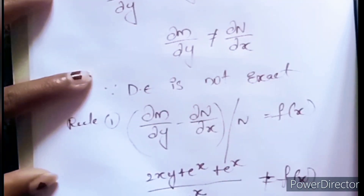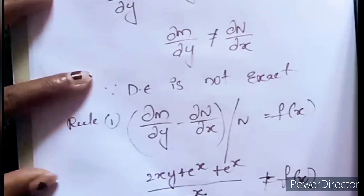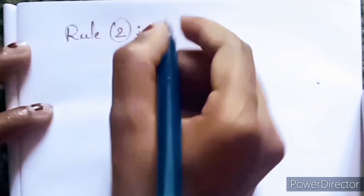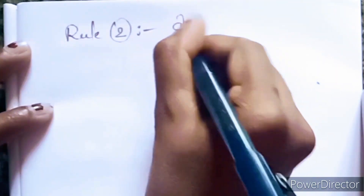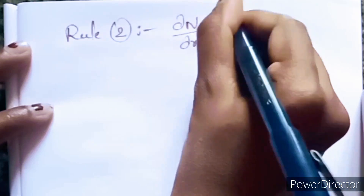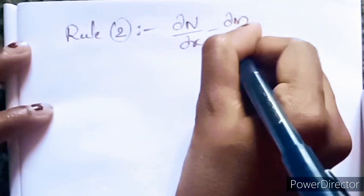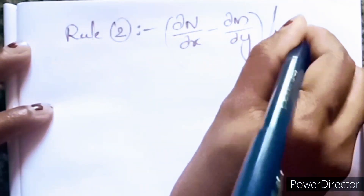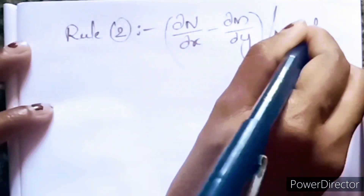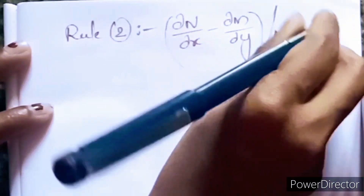So now we will go for Rule 2. Rule 2 states: (∂N/∂x − ∂M/∂y) divided by M should be equal to f(y).